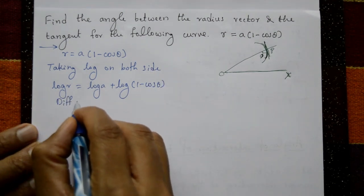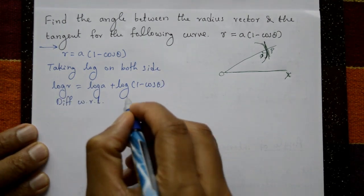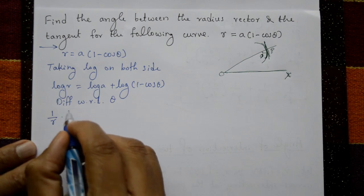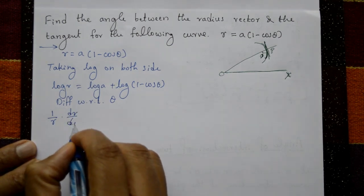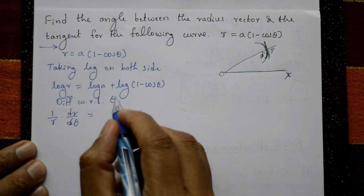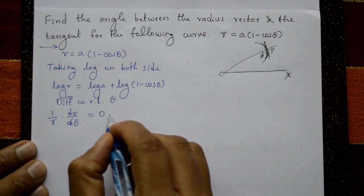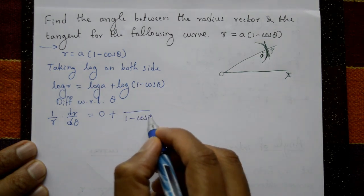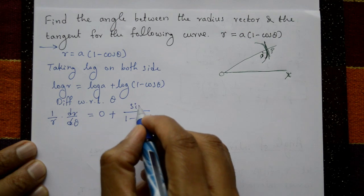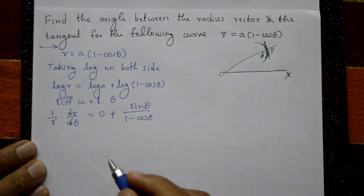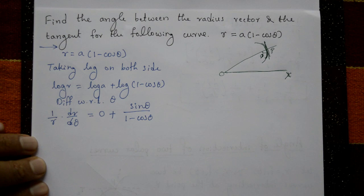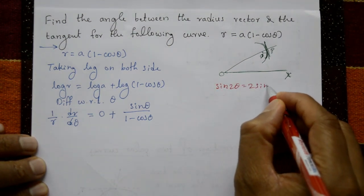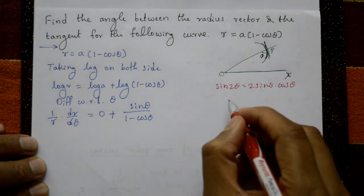Differentiating with respect to θ: the left-hand side gives (1/r)(dr/dθ). Log a differentiates to 0, and differentiating (1 - cos θ) gives +sin θ. Now recall the sine double-angle formula: sin 2θ = 2 sin θ cos θ.